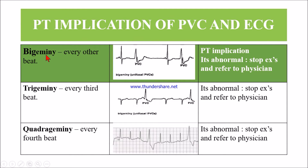If it is bigeminy — every other beat — this is a bigeminy unifocal PVC. When there is bigeminy with unifocal PVC, it is abnormal because the patient is having a problem and cannot continue exercise. We need to stop the exercise and refer them to their physician. If it is trigeminy — every third beat — this is again abnormal and we need to stop exercise and refer. If it is quadrigeminy — every fourth beat — this is again abnormal and we need to stop exercise and refer to the physician.